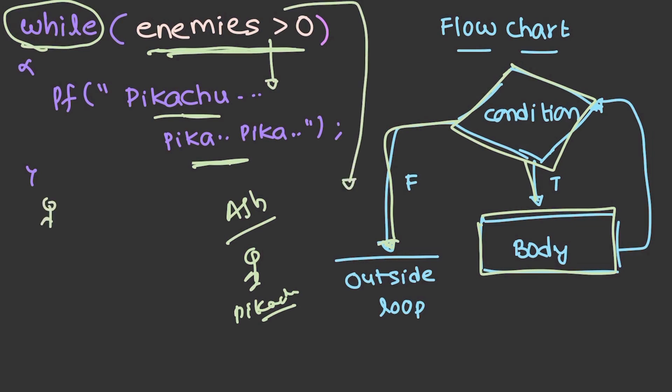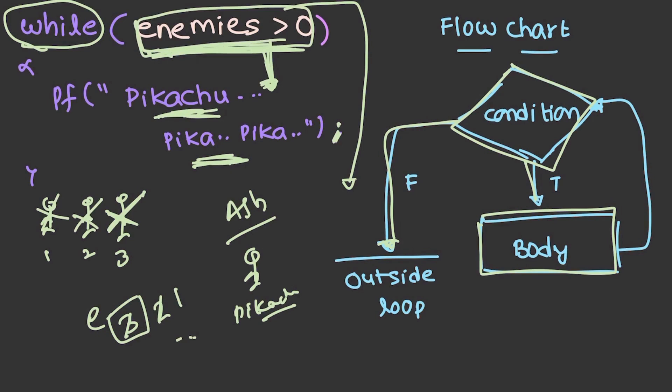For example, it is having 3 enemies, and whenever this is printed, I am trying to kill an enemy. Initially, the value of enemies is 3 and as it enters the loop, it will be printed once and it will be killed. The value becomes 2, it enters the loop again, it will be killed and the value becomes 1, and so on. Till the point where the condition is true, the statements in the loop will be executed. After that, it will just come out of the loop.